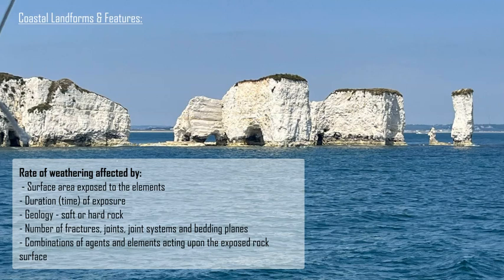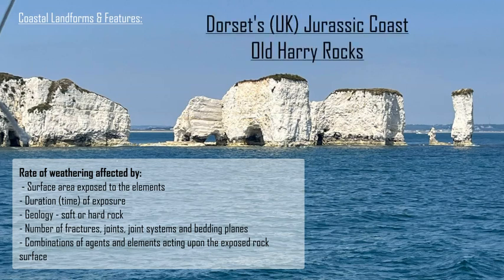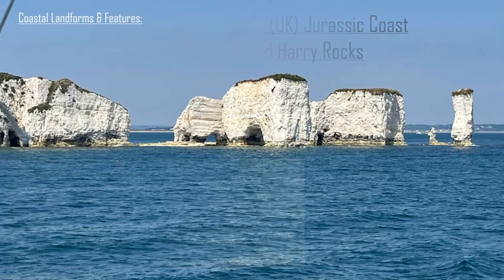In this case, we're taking the coastline of southern England in Europe, and in particular a part of Dorset's Jurassic Coast, which is a World Heritage Site. These rocks in particular are called Old Harry Rocks, and they are part of the headland of Studland, which protrudes out into the English Channel between Dorset and the Isle of Wight.